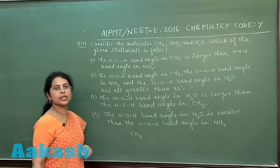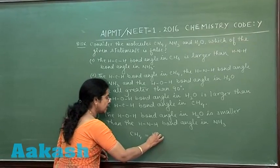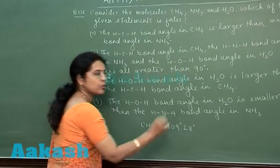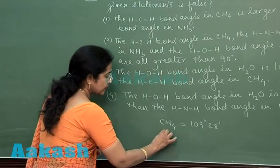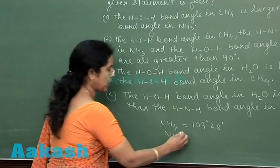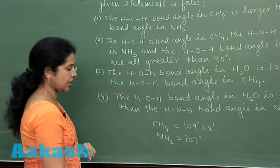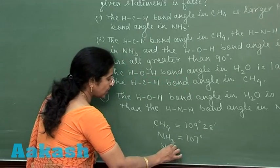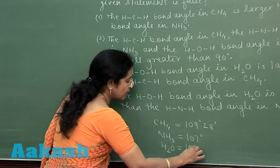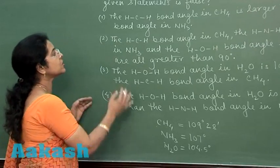In the case of methane, the bond angle is 109 degrees 28 minutes. For ammonia, which has three bond pairs and one lone pair, the bond angle is 107 degrees. The third compound given is water, in which the bond angle is 104.5 degrees.